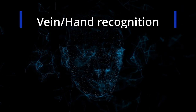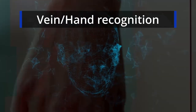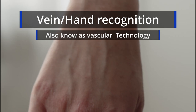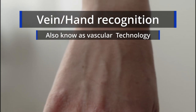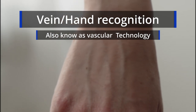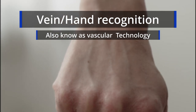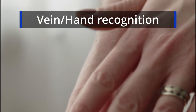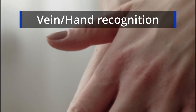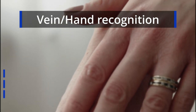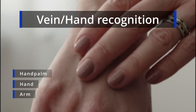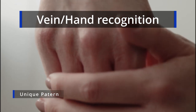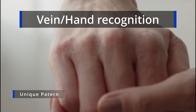Vein and hand recognition is growing in popularity. This is mostly used in forensic science and is an extension of fingerprinting. Fingerprinting requires direct contact, but vascular patterns can be seen on security cameras. The most common areas are the arm, hand, or palm. All veins have a unique pattern.